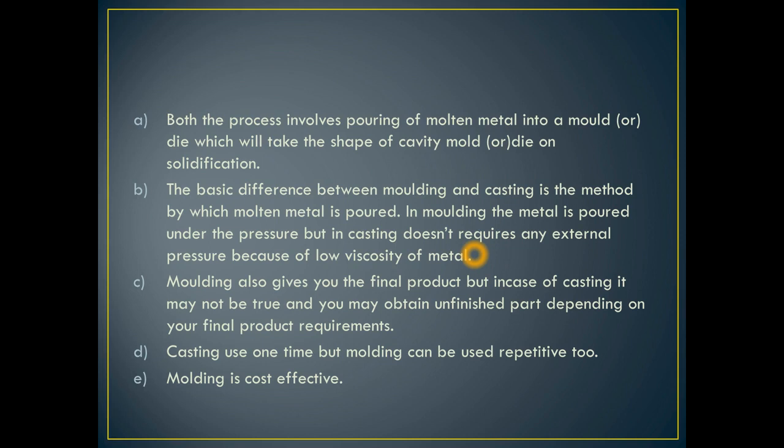In casting, we use low viscosity metals like aluminum. These metals are already low viscosity, so casting does not require any external pressure. In molding, we will use external pressure — under pressure, we will pour the molten metal. This is the main difference.